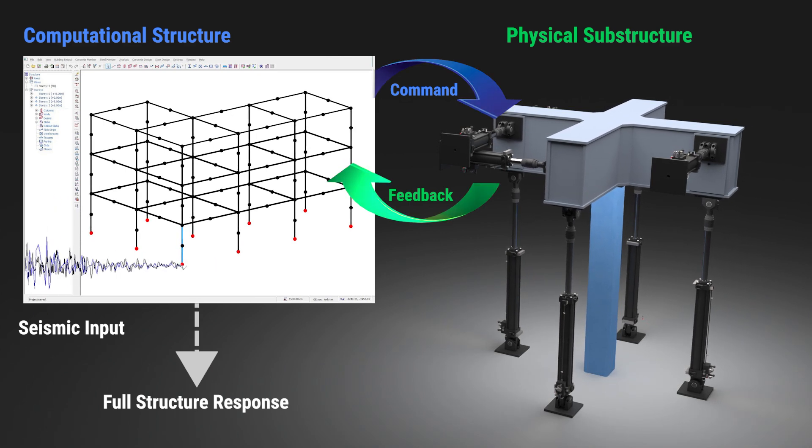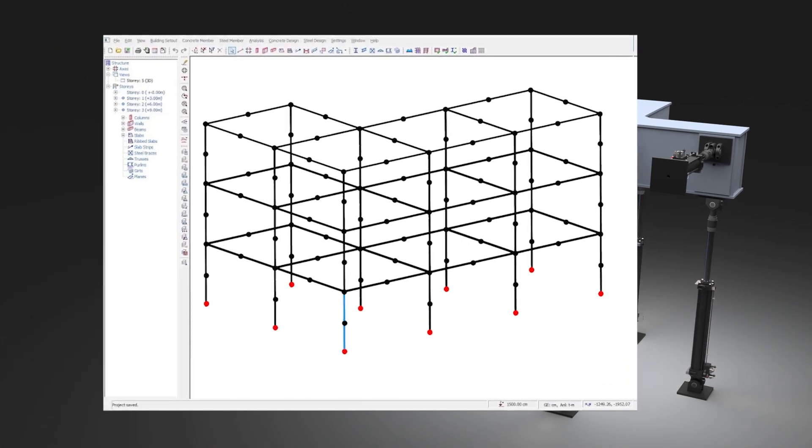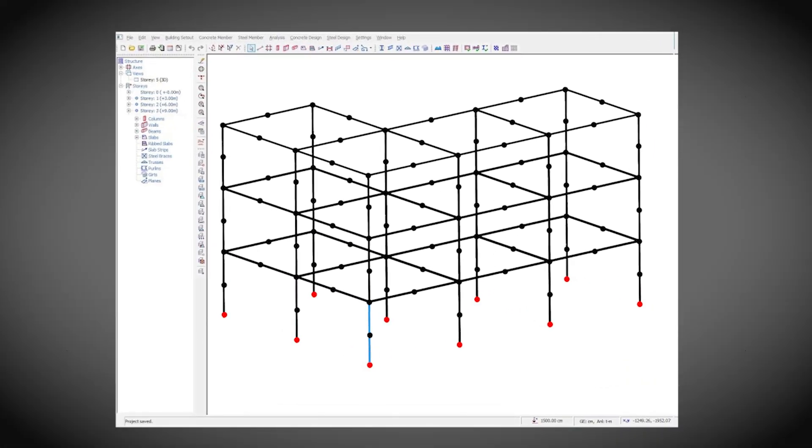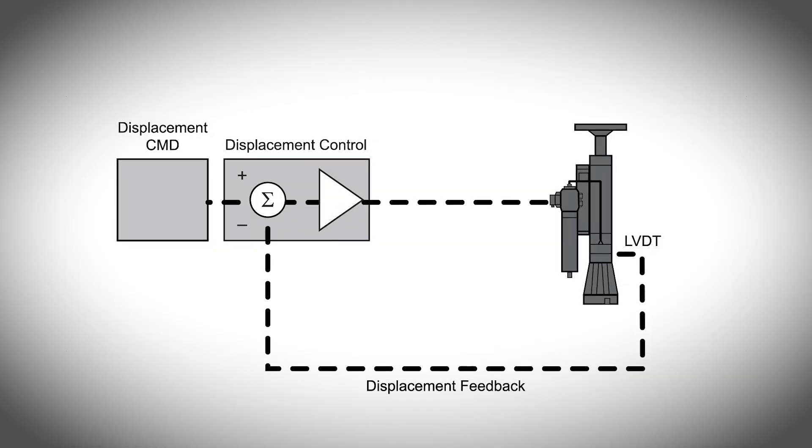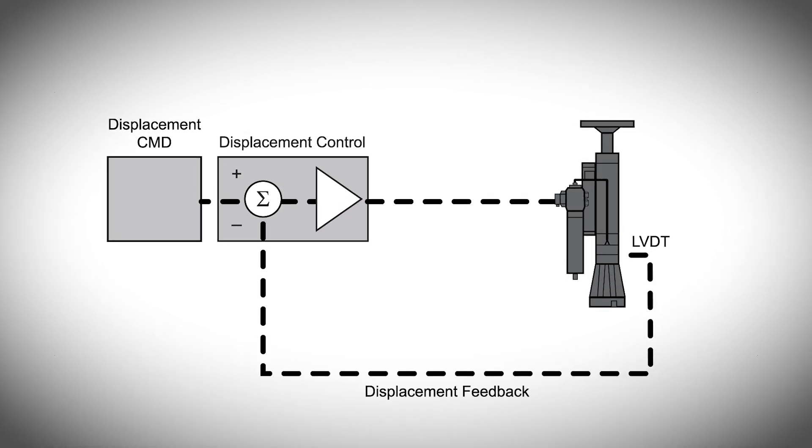The computational component of a hybrid simulation setup is typically a finite element analysis or FEA model that outputs displacement commands to the physical substructure test using a control system operating in displacement control.